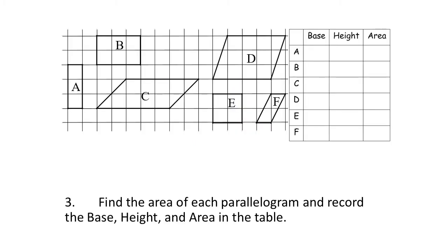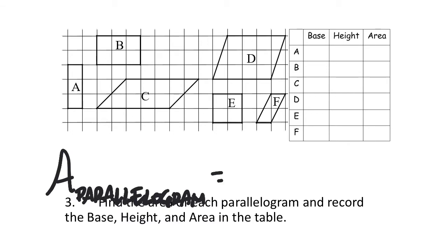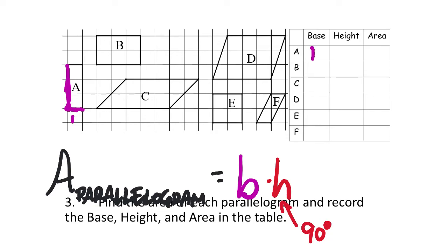Here's our parallelograms. We've already seen the formula for the area of a parallelogram: you're going to take the base value and multiply it by the height. The height is where it makes a 90-degree angle with the base specifically. Rectangles are parallelograms — two sets of parallel lines, just like squares are. Looking at A: the base is one unit, and the height is three units, because that creates the 90-degree angle there. Area: base one times height three equals three square units.